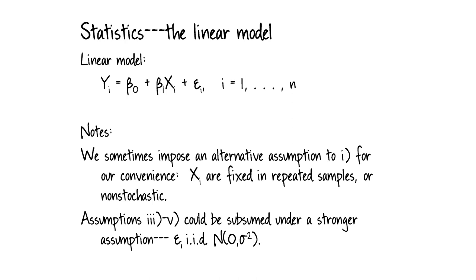A couple of notes: sometimes for convenience we assume that the X_i's are fixed in repeated samples, or non-stochastic. This makes some of the proofs easier, and the results essentially go through without that assumption. Also, assumptions three through five could be subsumed under the stronger assumption that the epsilons are IID normal(0, sigma squared). We don't typically need this, but sometimes imposing it makes proofs easier and more elegant.